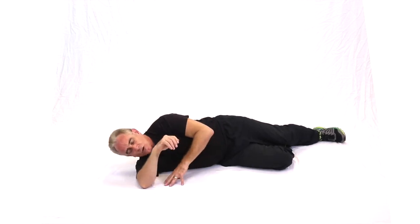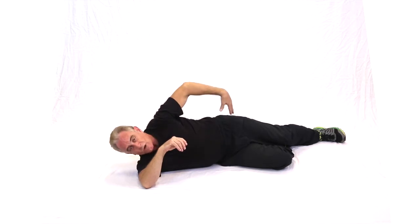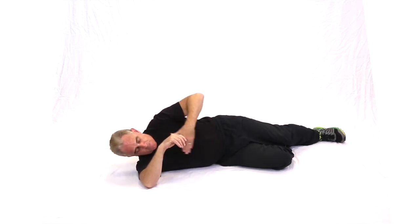This move is line total oblique crunch and it involves both the upper and the lower obliques. Again, we're going to anchor the hips, shoulders straight up and down.